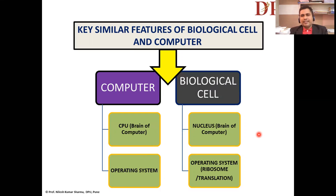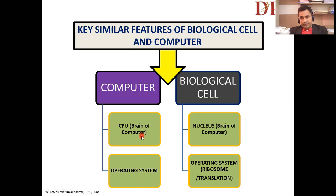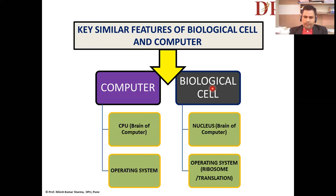Another similarity: in the computer system, the central processing unit (CPU) is the brain of the computer. On the other side, the biological cell has its own brain — the nucleus. Computers have their own operating system like Windows and many more, and the biological cell also has its own operating system — most conveniently, the ribosomal translational machinery is referred to as the operating system.